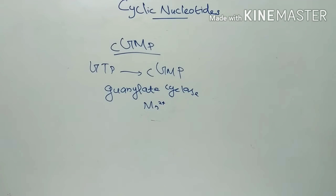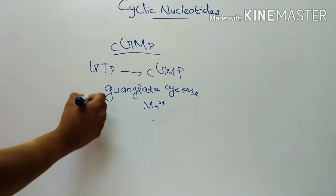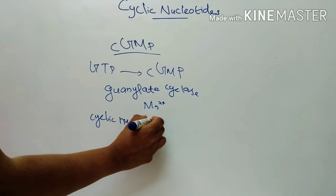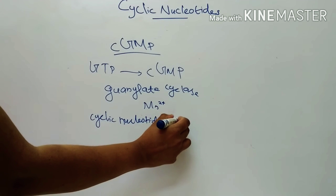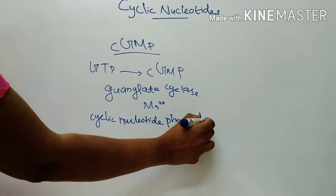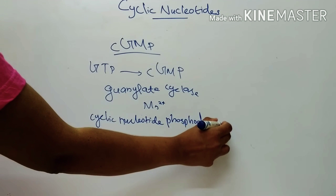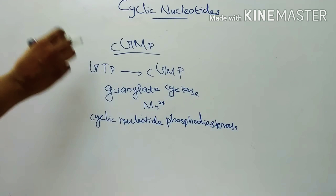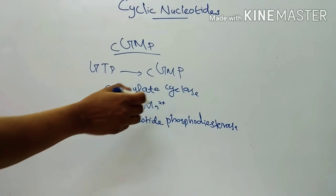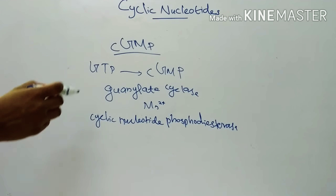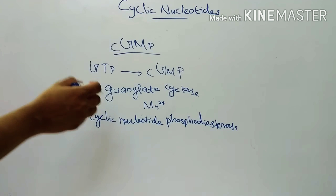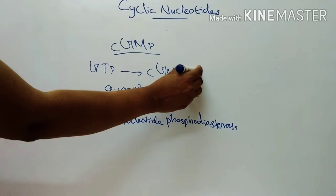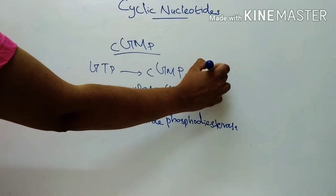Cyclic GMP is hydrolyzed by cyclic nucleotide phosphodiesterase, converting cyclic GMP to 5' AMP.